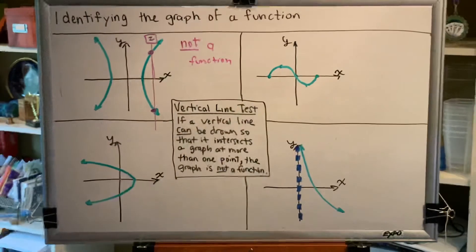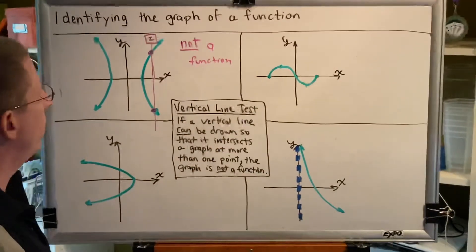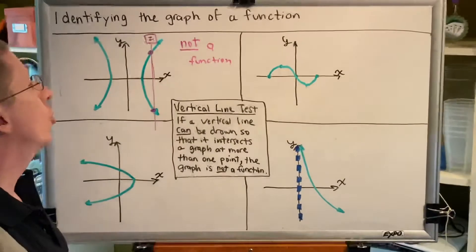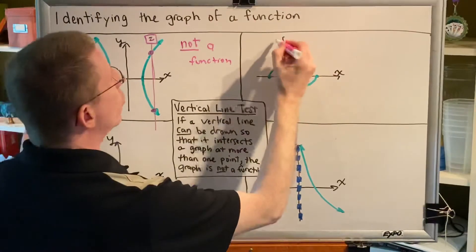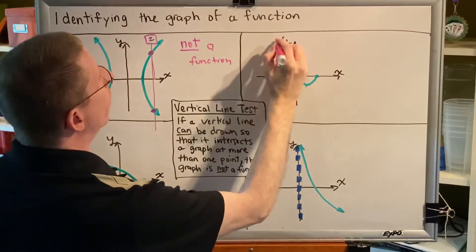Let's turn our attention to this next picture. Can we draw a vertical line that will intersect this relation at more than one point? The answer is no. If I try and draw a vertical line, it will only hit it at exactly one point.